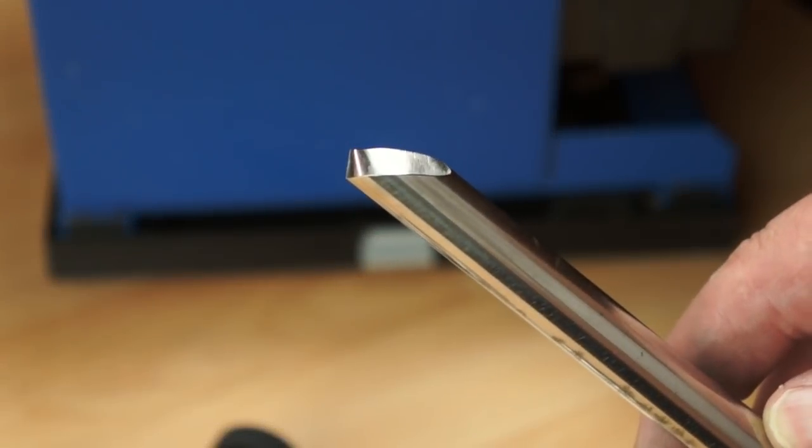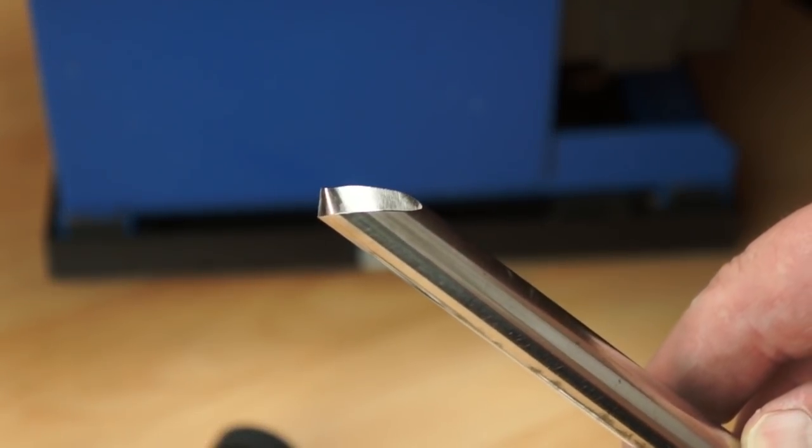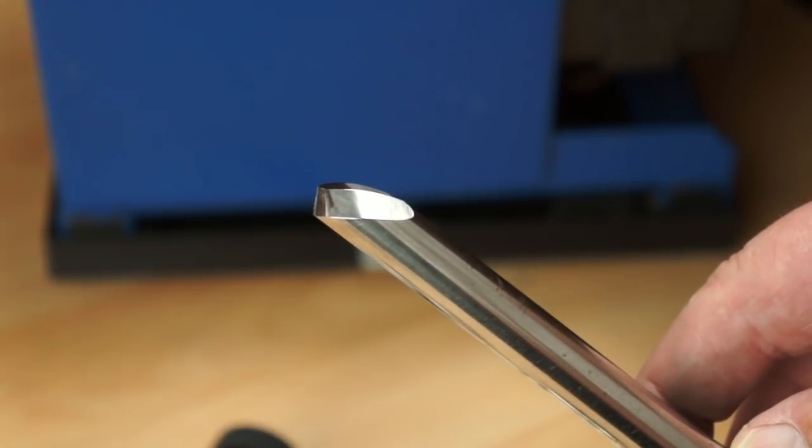One of the trickiest profiles to sharpen is the Ellsworth side grind. It's a very long side with a short bevel angle.